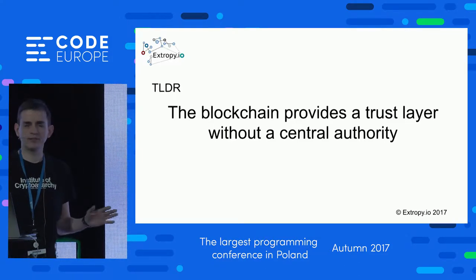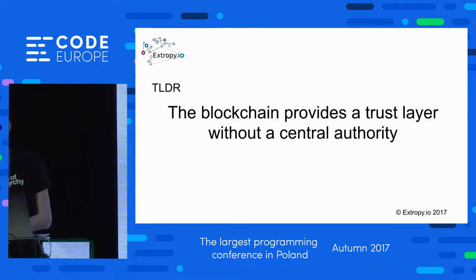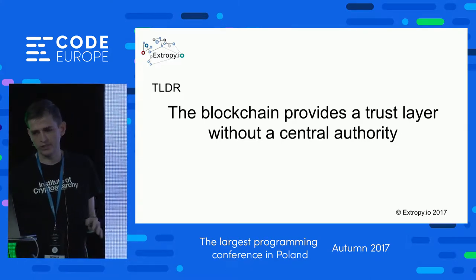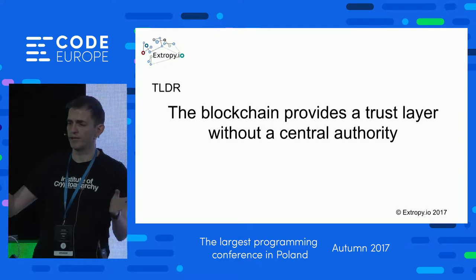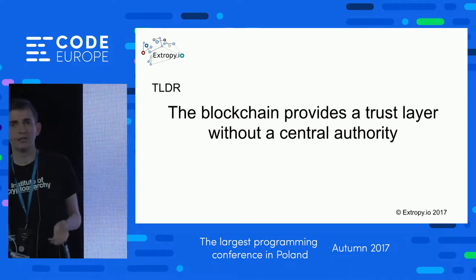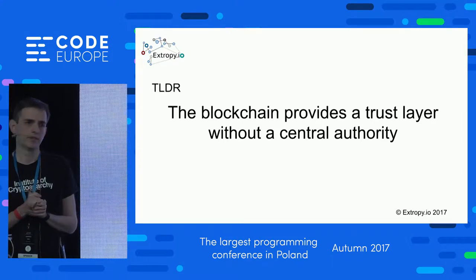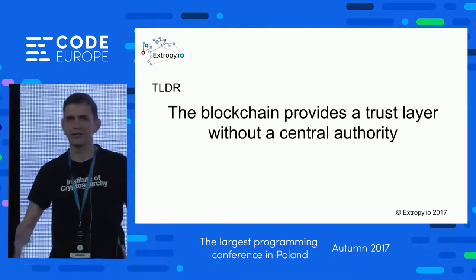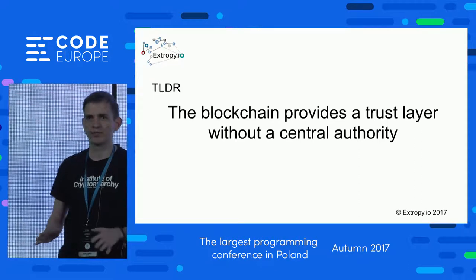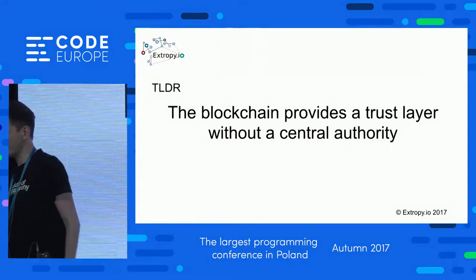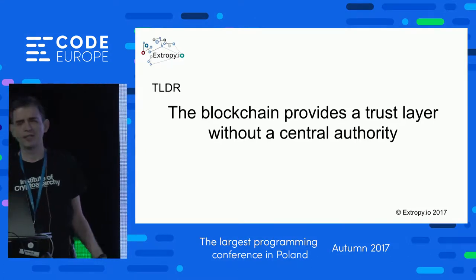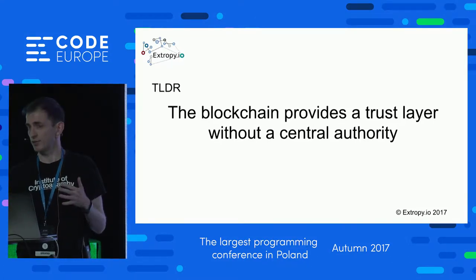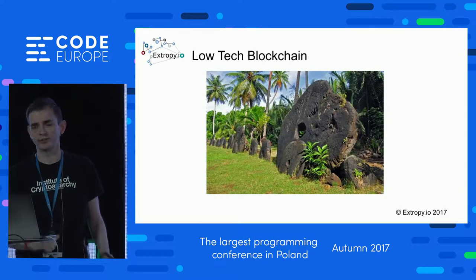If you doze off and remember nothing else, the basic takeaway message is that the blockchain is all about providing a trust layer without a need for a central authority. I will keep coming back to this idea — blockchains are all about disintermediation. If you're thinking about writing an application for the blockchain and it's all about trust, then you've got a good use case.